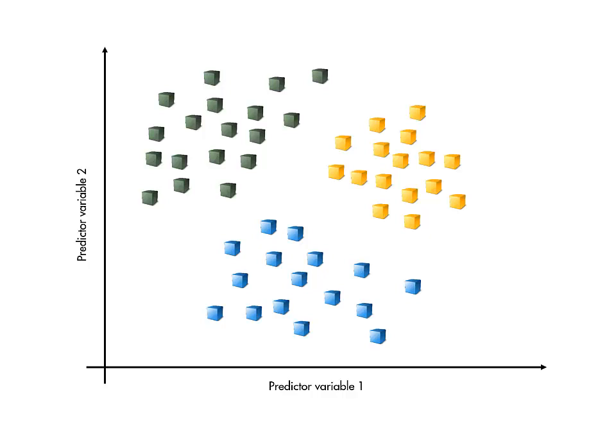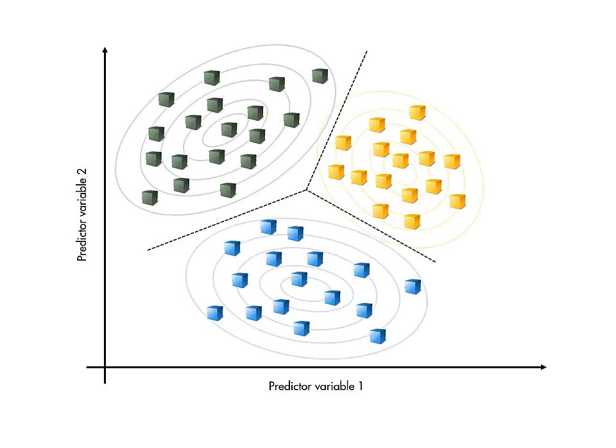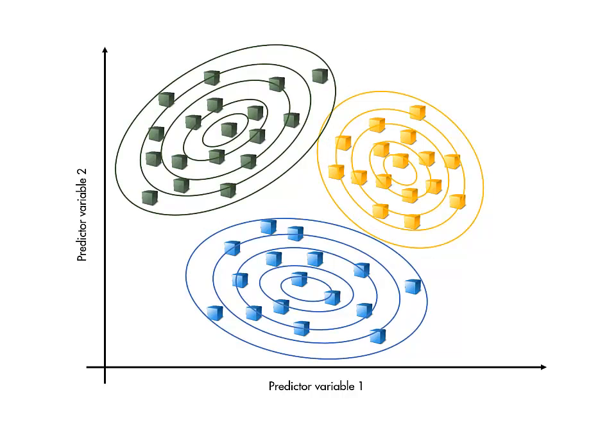Discriminant analysis uses the training observations to determine the location of a boundary between the response classes. The location of the boundary is determined by treating the observations of each class as samples from a multidimensional normal distribution.